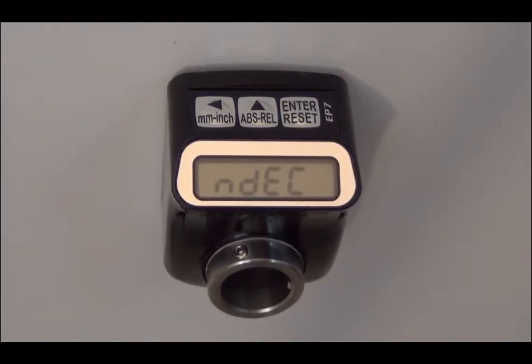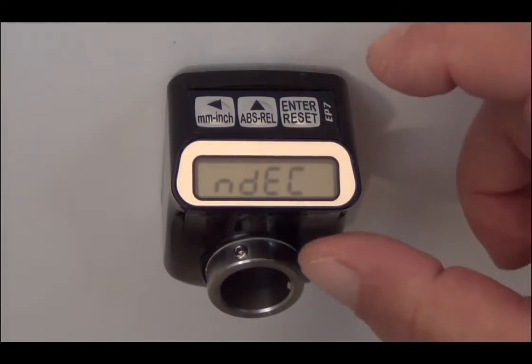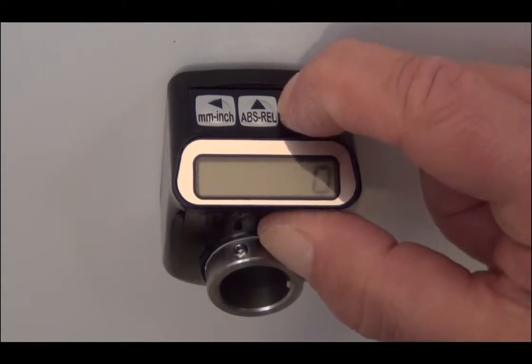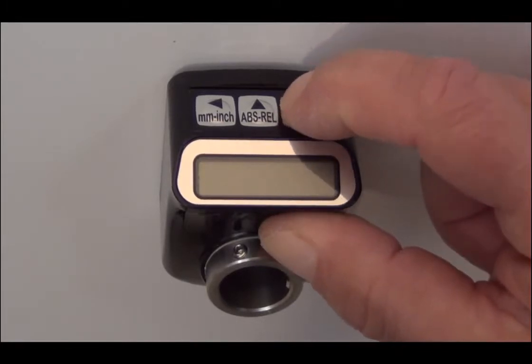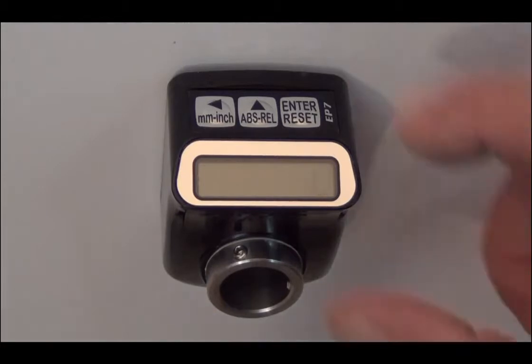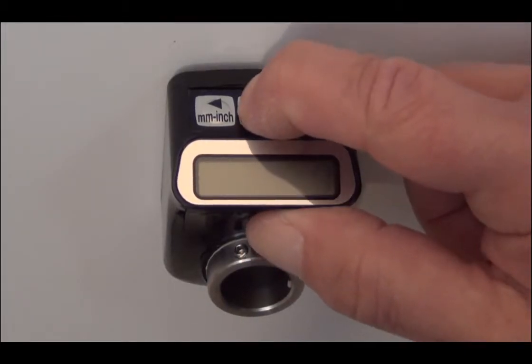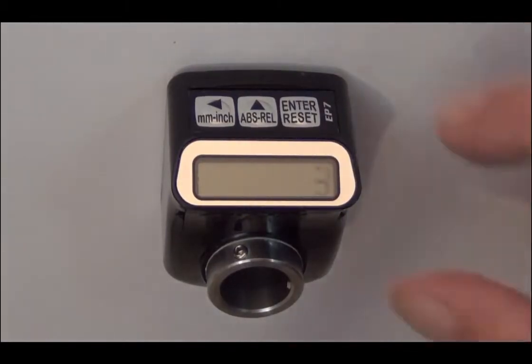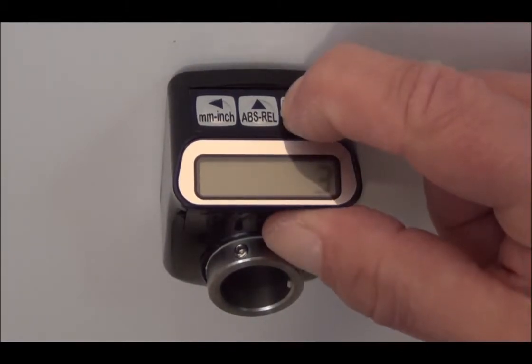NDEC is now displayed, which is the number of decimal places that the display will display with the desired COUNT PER TURN. In this example, we wish to display thousandths of an inch, so three decimal points will be programmed. Depress the ENTER key until the number of decimals desired is flashing, and then depress the COUNT key UP until 3 is displayed. Then hit ENTER.